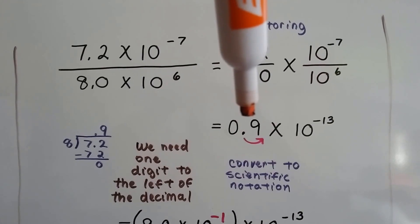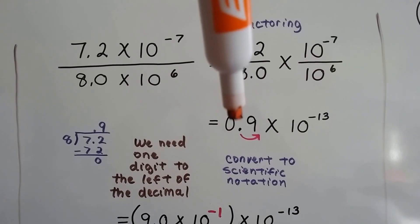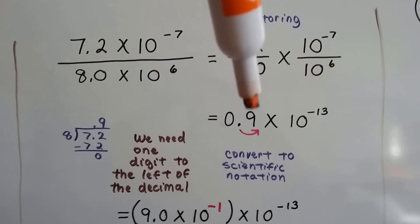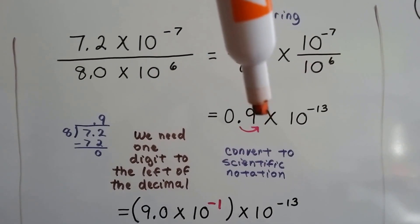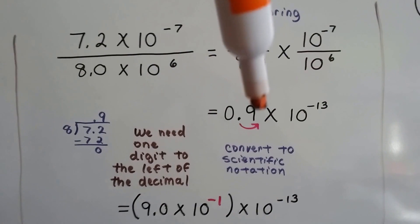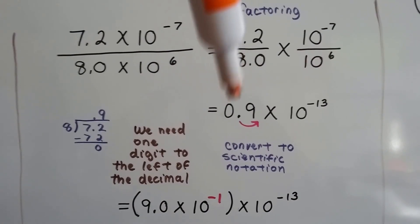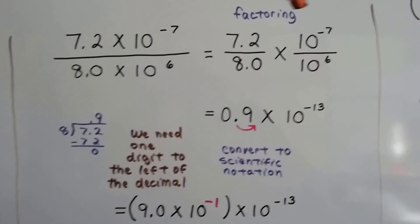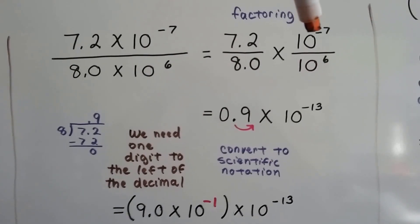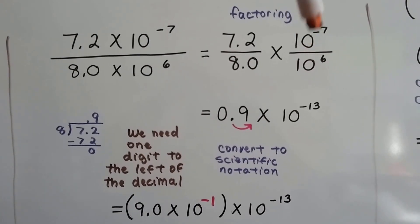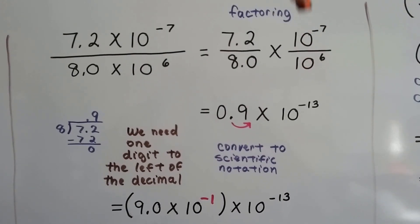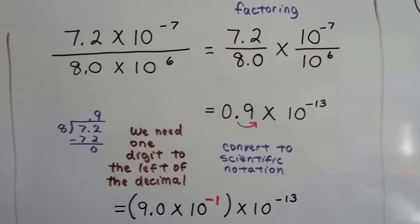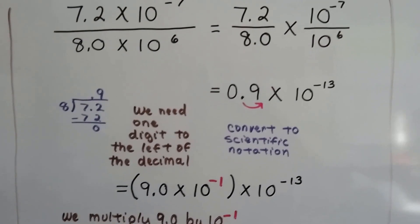Now we have 0.9, but that decimal place can't stay there — we can't have a zero to the left of the decimal. We have to have one digit to the left of the decimal point, and the zero doesn't count, so we're going to have to move it. We have a negative 7 exponent minus a positive 6 — because the quotient rule says we subtract — giving us 10 to the negative 13th.